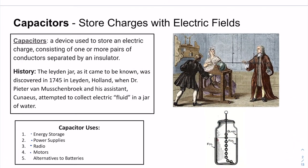All right, so we built the first capacitor in class. This is the Leyden jar. What is a capacitor? It's a device used to store electric charge. It consists of one or more pairs of conductors separated by an insulator.